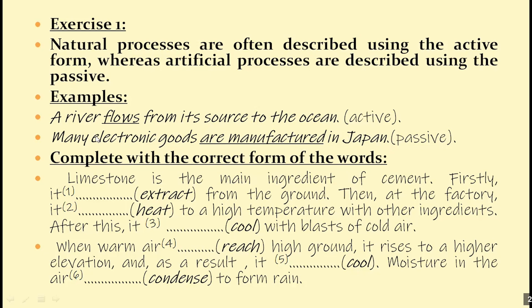So one more time: if a process is natural, like 'a river flows from its source to the ocean,' we use the active. But if it's artificial, like 'many electronic goods are manufactured in Japan,' we use the passive, which is formed by using verb to be plus the past participle.